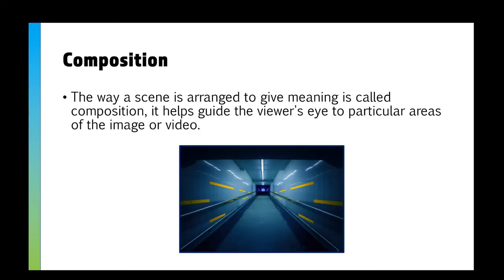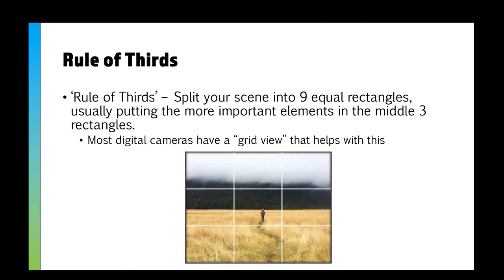First things first, we need to talk about the word composition. This is a way a scene is arranged to give meaning. It helps guide the viewer's eye to particular areas of the image or video, which is called the focal point. When we're composing and creating our scenes and images — and this works for both photography and videography — we can use what's called the rule of thirds.